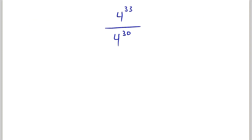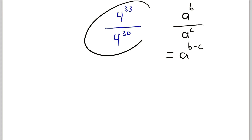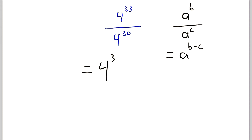Alright, next problem — here's a fun one. This problem could be really disgusting if we didn't know our exponent rules. Just remember that a to the power of b divided by a to the power of c is equal to a to the power of b minus c. So four to the power of 33 over four to the power of 30 is equal to four to the power of 33 minus 30, which equals four to the power of three, and that is equal to 64.